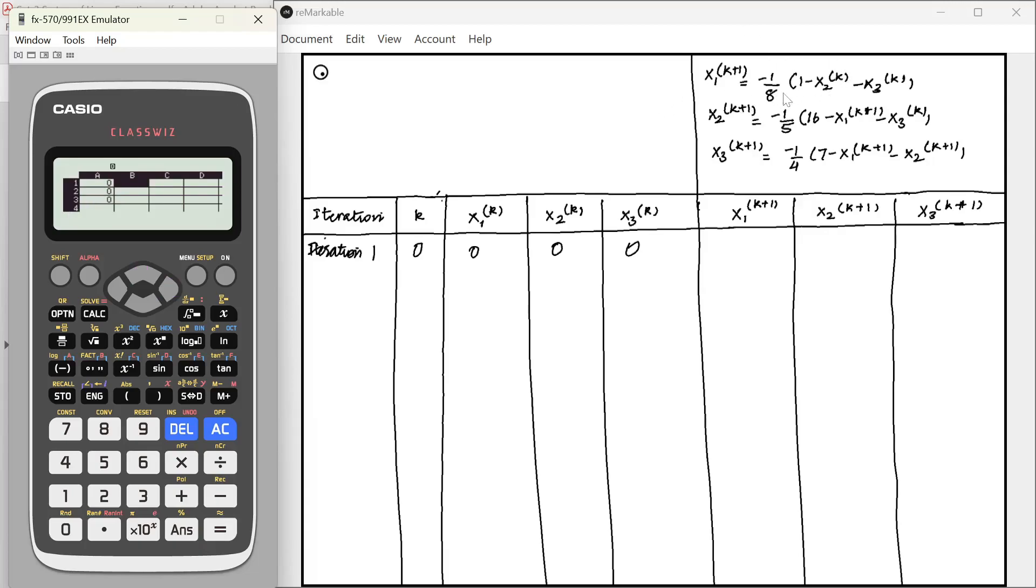From this particular equation, we can say that x1 k+1 is given as this. Now let us write this formula down in our calculator. For that what we will do is option, go to the B1 cell, option, fill formula number 1 and formula is going to be minus 1 by 8 times 1 minus x2 will be stored in A2 and x3 will be stored in A3. Here, you do not need to consider k, k+1, just write it without these iteration superscripts.